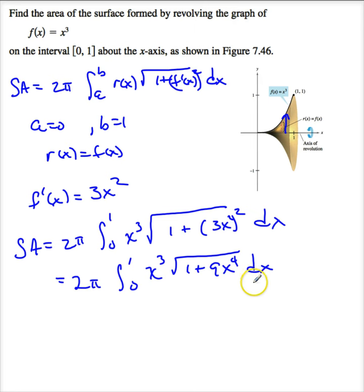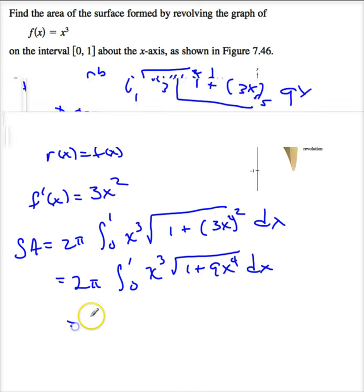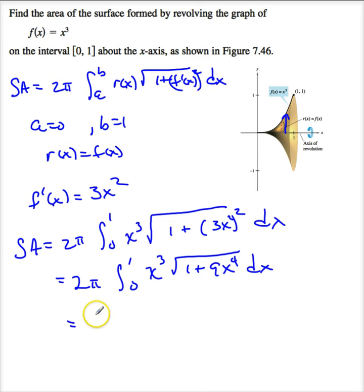I can do a substitution here. When I do this integration, I wind up with 2π over 36, so that's π over 18, times (1 + 9x⁴) to the 3/2. So I get π over 27, evaluated at 0 and 1.